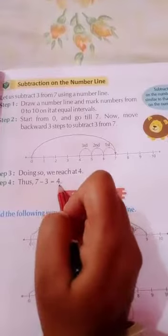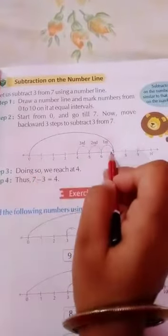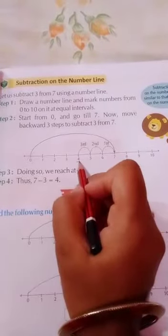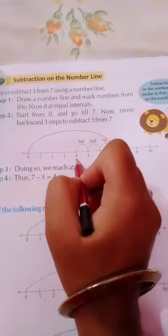Now children, what do we do? You can see that we have subtracted 3 from 7, so our answer is 4. So this is your answer, 4.